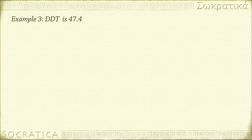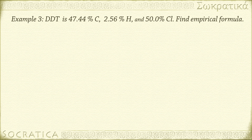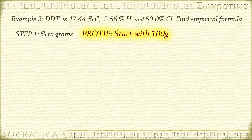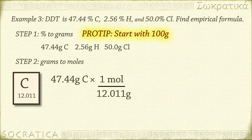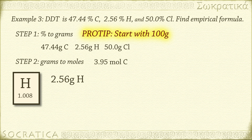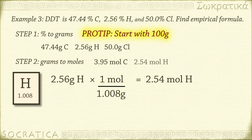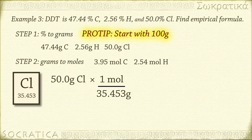Let's do one more, even harder example. DDT is an insecticide that is 47.44% carbon, 2.56% hydrogen, and 50.0% chlorine. What is the empirical formula? Step 1: in a 100-gram sample, we have 47.44 g C, 2.56 g H, and 50.0 g Cl. Step 2: 47.44 g C × (1 mol / 12.011 g) = 3.95 mol C. 2.56 g H × (1 mol / 1.008 g) = 2.54 mol H. 50.0 g Cl × (1 mol / 35.453 g) = 1.41 mol Cl.